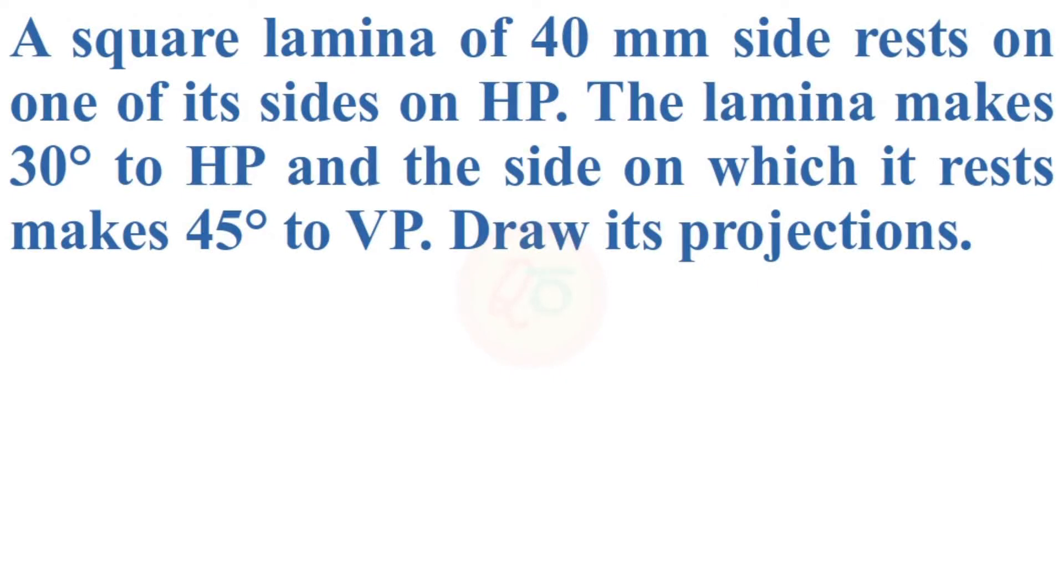Hello all, welcome back to Quest Zero. In today's session, continuing our discussions on the projection of planes, we will take up a square lamina. The problem statement is as follows: A square lamina of 40 millimeter side rests on one of its sides on HP. The lamina makes 30 degrees to HP and the side on which it rests makes 45 degrees to VP. Draw its projections.